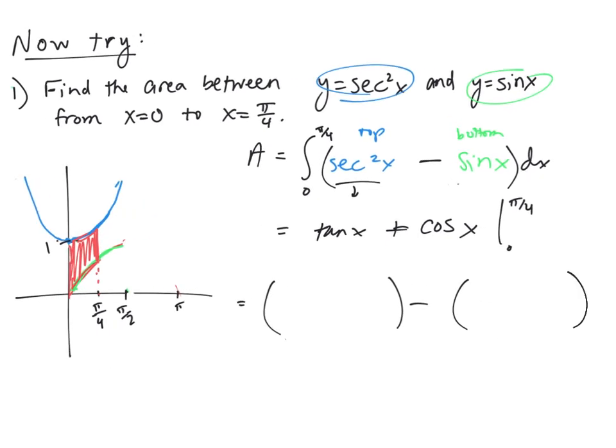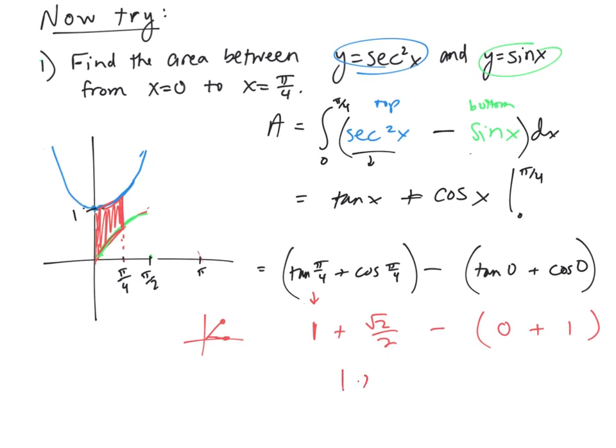Evaluating from 0 to π/4, let's plug them in. I like to start with parentheses so I don't mess up signs. I've got tan(π/4) + cos(π/4) minus tan(0) + cos(0). Write it out. Tan(π/4) equals 1, cos(π/4) is √2/2, minus - tan(0) is 0 and cos(0) is 1.